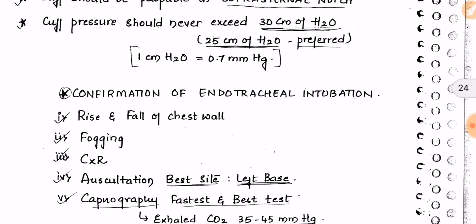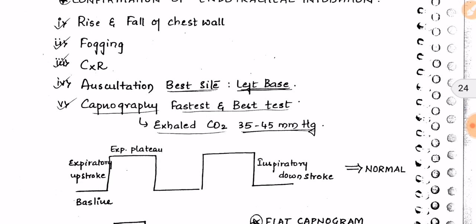To confirm endotracheal intubation: first, there should be rise and fall of the chest wall with each ventilation. Second, fogging of the tube should be visible. We can also confirm by chest X-ray and auscultation over the left base of the lung. Capnography is the fastest and best test.